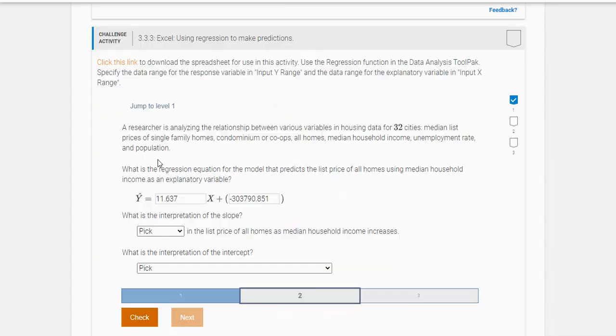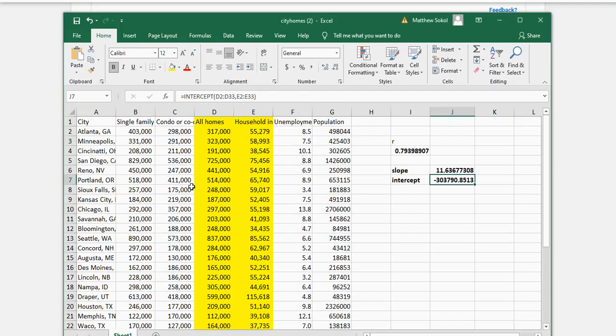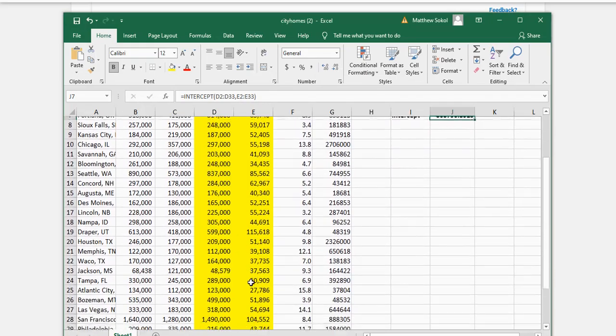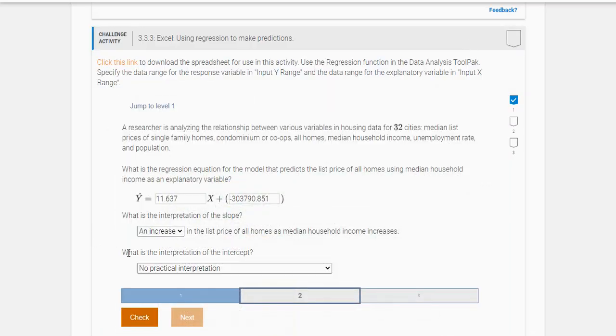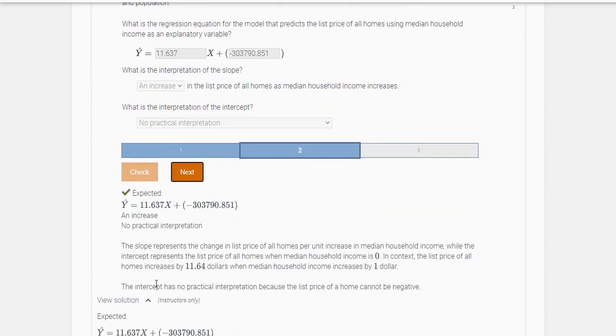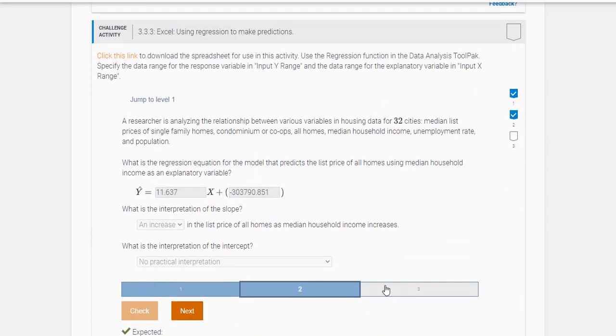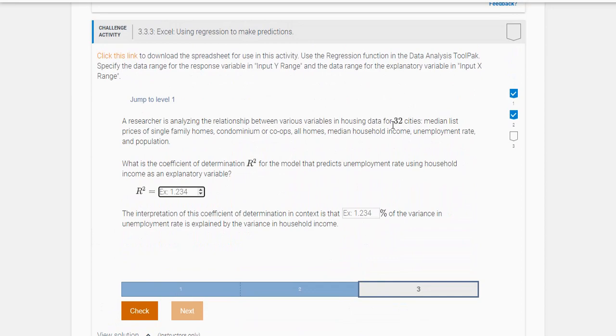What is the interpretation of the slope? Because the slope is positive, we have an increase in the list price of homes as the median home value increases. And what is the interpretation of the intercept? There's no practical interpretation here, because there's no x values in household income close to zero. Yay, we got it.